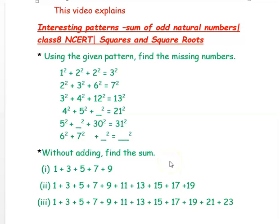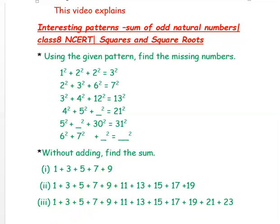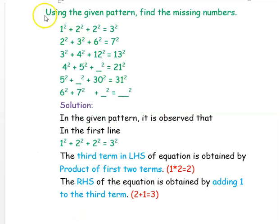Hi, we are from Atkontuition. In this video, we are going to see a few examples on finding missing numbers based on the given pattern. And also, we are going to find the sum of the odd natural integers. Now, the first question is: using the given pattern, find the missing numbers.